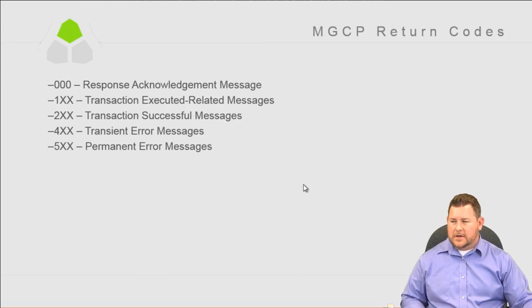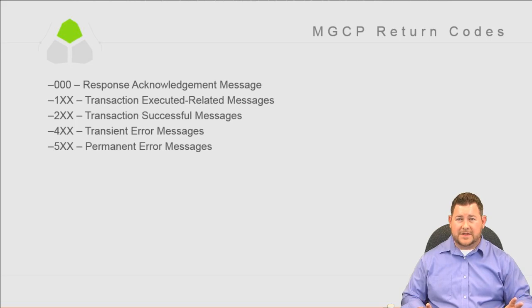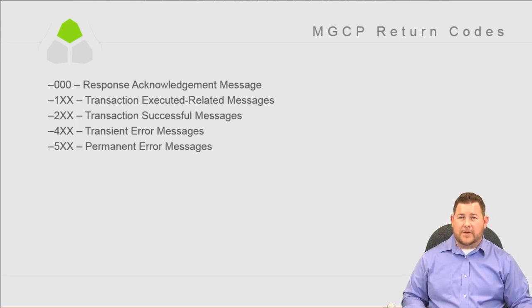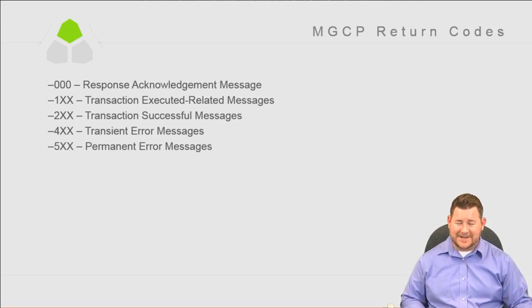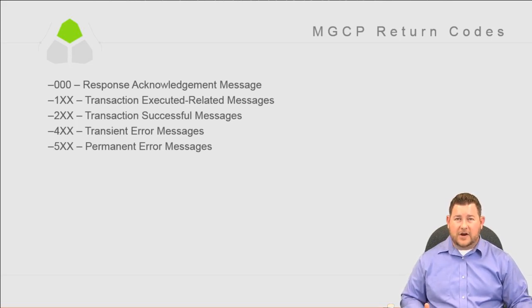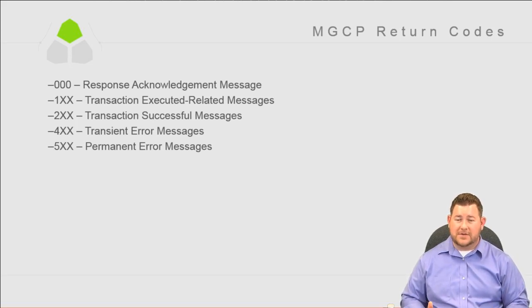MGCP return codes are similar to SIP. The response acknowledgement is three zeros — just straight up 000 meaning 'I got that message.' The one-hundred series is a transaction executed or related message. Two-hundred is transaction successful, like a 200 OK in SIP. Four-hundred series is transient error messages, like a 404. Five-hundred series is permanent error messages, like a 501. You'll also see these types of codes in SIP.